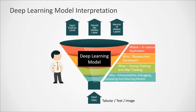When it comes to interpretation, we have three questions in mind. First, what is the contribution of each feature for the particular output? Second, what is the contribution of each neuron in a particular layer for the particular output? And third, what is the input feature that is activating that neuron for that kind of behavior? These are the three questions that come to a developer's mind when they try to interpret a given deep learning model.